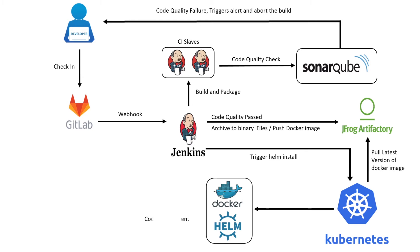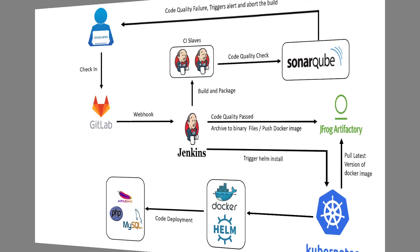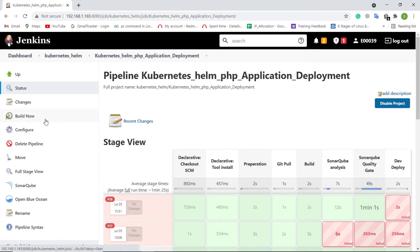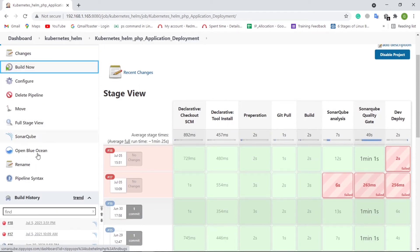The PHP deployment will be exposed as an external service, which in turn uses MetalLB to provision a layer 4 load balancer and expose the application on the predefined IP address. Now let us see how the continuous integration and continuous deployment of the PHP application happen via the Jenkins pipeline.